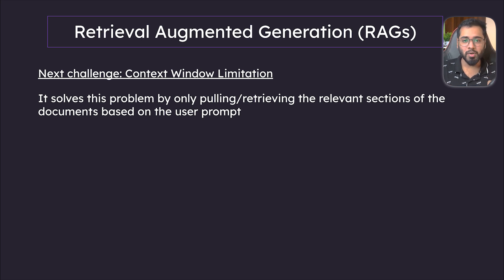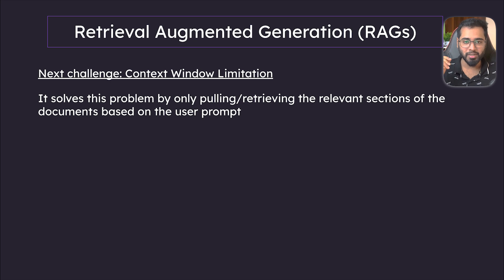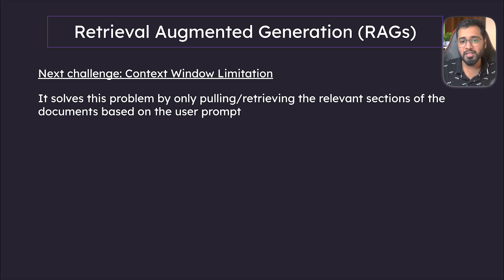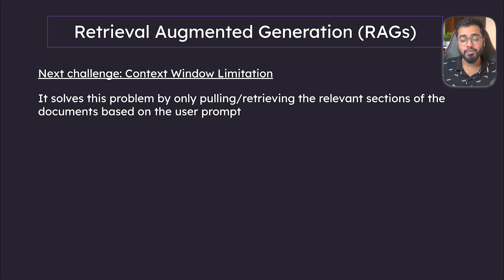So this is the second problem that RAGs solve, which is context limits. You can make all these PDFs and documents available to the LLM without having to actually dump all of it into a prompt. Let's say you have 100 or 1,000 documents sitting in your own private database. RAGs solve this by only pulling in the relevant sections of the documents based on the prompt that the user provided. This way we keep things efficient — we only extract certain chunks from all the documents that are relevant to the user's question and then send it to the LLM. That's why it's called RAGs, or Retrieval Augmented Generation.